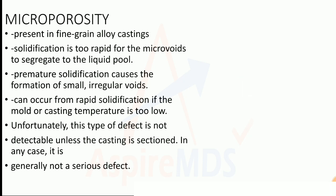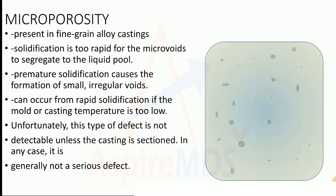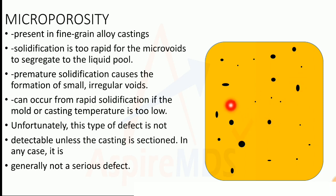Micro porosity is seen when using fine grain alloy castings. The rapid solidification from liquid to solid stage leads to formation of micro voids within the structure. This premature solidification causes small, irregular voids and can occur when the mold or casting temperature is very low. This internal porosity is visible only on sectioning and does not cause serious defects.